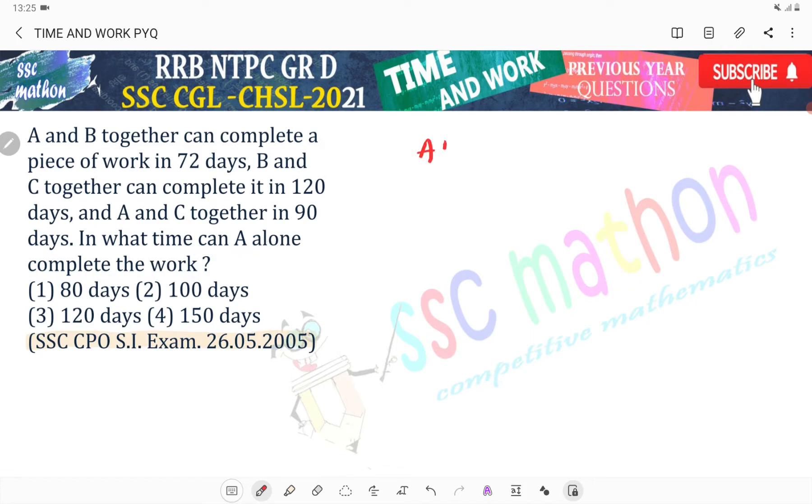A, B, C. A plus B kya diya hai? 72 days. B plus C kitna diya ho hai? 120. A and C kitna diya ho hai? 90 days.